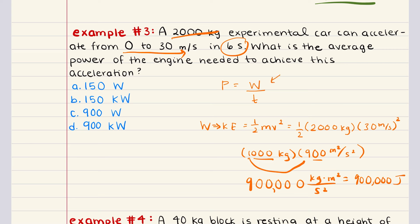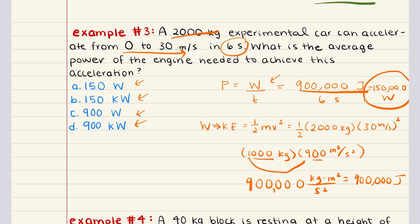That 900,000 joules is our numerator in the power equation. Dividing by six seconds gives us 150,000 watts. Looking at our answer choices: A is 150 watts, B is 150 kilowatts, C is 900 watts, and D is 900 kilowatts. We calculated 150,000 watts. Converting to kilowatts — dividing by 1,000 — gives us 150 kilowatts, which aligns with answer choice B. So the correct answer to problem three is B.